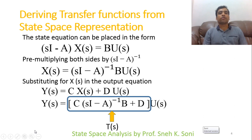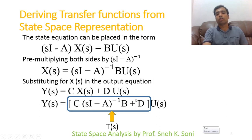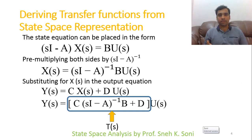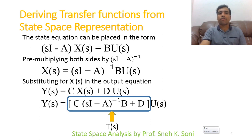We already know that the transfer function is the Laplace of output divided by Laplace of input. So Y(s)/U(s) gives us the transfer function: T(s) = C(sI − A)⁻¹B + D. This is the equation through which we can get the transfer function from the given state model. Given the ABCD matrices, placing them in this equation and simplifying will yield the transfer function. To clarify this, I will cover one example so you can apply the equation.